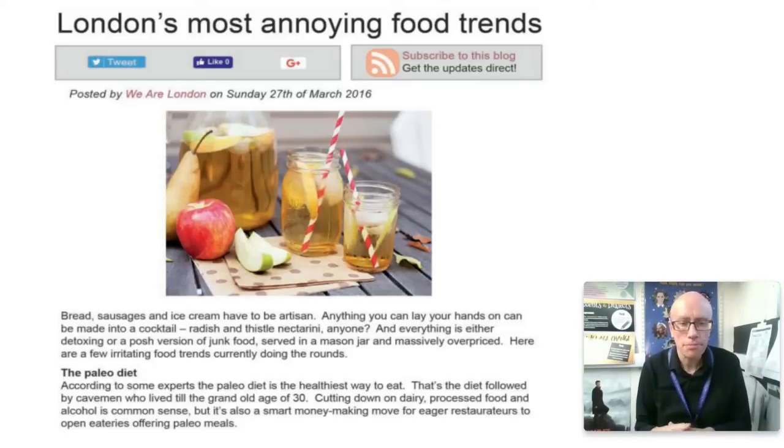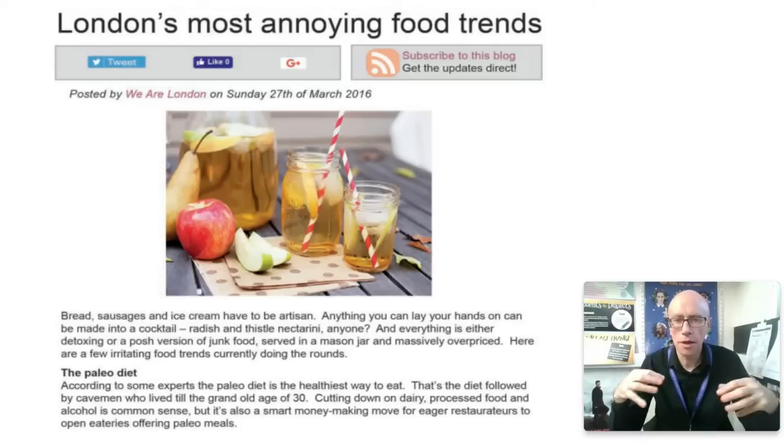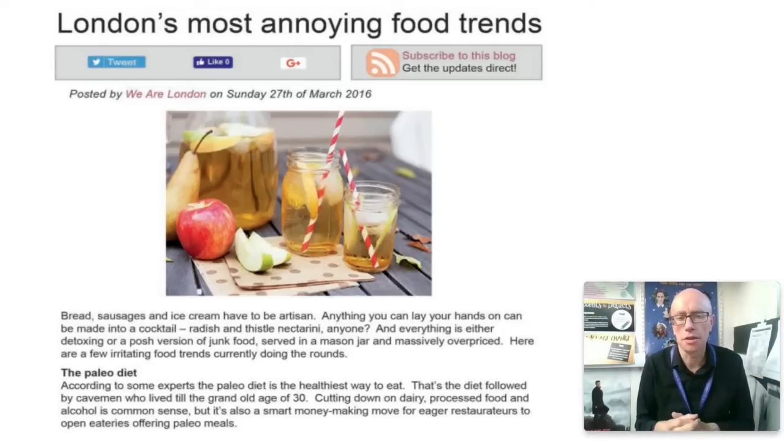So when you're doing your analysis make sure that you tick all the boxes and you really get your hands dirty with the A01 terms like I've just done there. The article starts with bread, sausages and ice cream - so these are hypernyms. They're broad terms and really we've got a comic contrast that's going on because these are everyday items of food, and then artisan seems very niche. So you've got a kind of comic contrast, a kind of juxtaposition of register that's going on which is actually characteristic throughout the entire text. We've got a nice variety in different sentence functions here. Look at your second sentence: 'Anything you can lay your hands on can be made into a cocktail - radish and thistle nectarini anyone?' So we've got the interrogative function that's being used here.